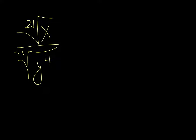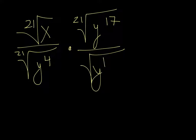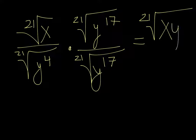So we're looking at the 21st root of x over the 21st root of y to the 4th. And I'm going to multiply the top and the bottom by the 21st root of y to the 17th. And as long as I'm doing it to the top and the bottom, it's perfectly legit. So in the top, both the radicals are the same. So I can combine them and make it the 21st root of x, y to the 17th.